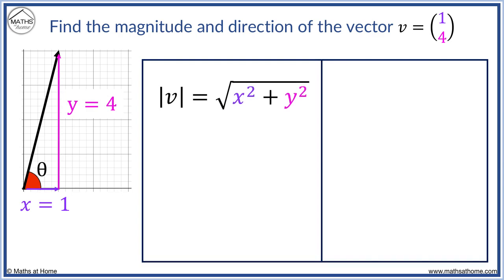We will first find the magnitude. We substitute x equals 1 and y equals 4 into the formula as shown. 1 squared equals 1, 4 squared equals 16, 1 plus 16 equals 17.